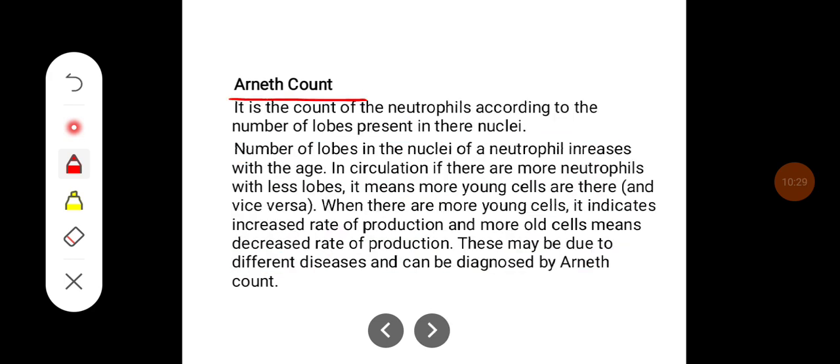Arneth count. Arneth count is the count of neutrophils according to the number of lobes present in their nuclei. Number of lobes in the nuclei of neutrophil increases with age. In circulation, if there are more neutrophils with less lobes, it means more young cells are there and vice versa.